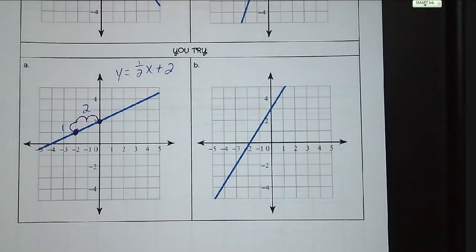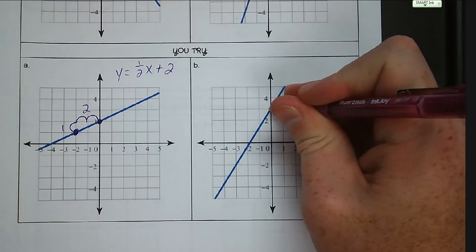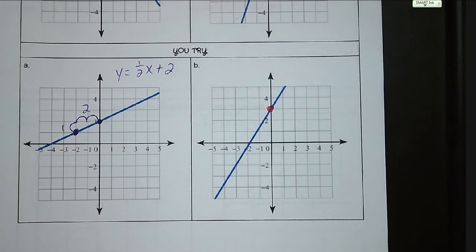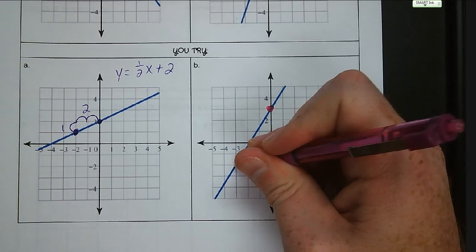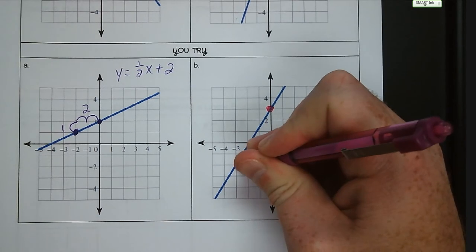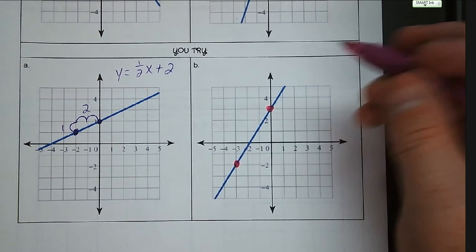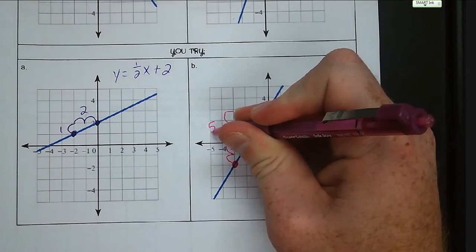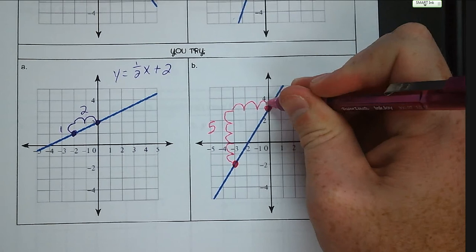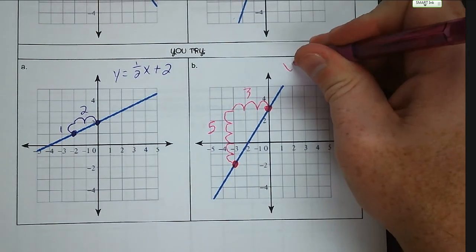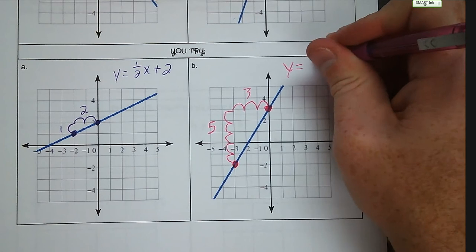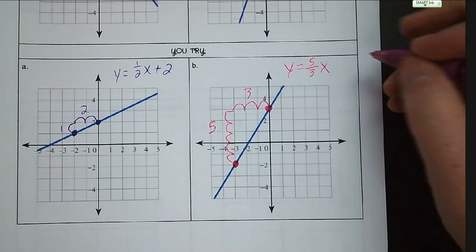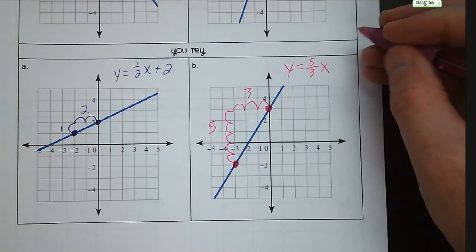For letter B, we have a point that is also our y-intercept. Another good point is where it crosses the corner of a grid line — going up five and to the right three. So my equation is y equals five-thirds x, and my intercept is at a positive three.